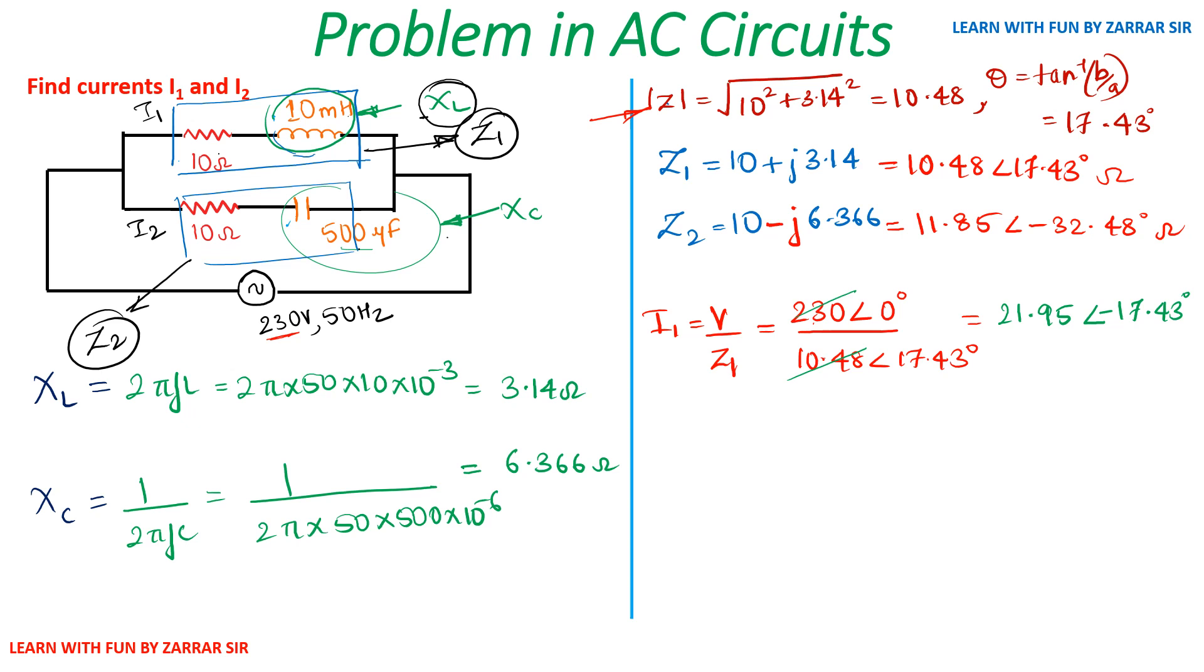Similarly, we'll calculate I2. How to calculate I2? V/Z2. V is 230∠0° divided by Z2, which is 11.85∠-32.48°. You can see how to solve this: just divide 230 with 11.85. The value is 19.41. And the angle, this numerator minus denominator, so minus minus will become plus. So angle will be 32.48°. Ampere is the current unit.